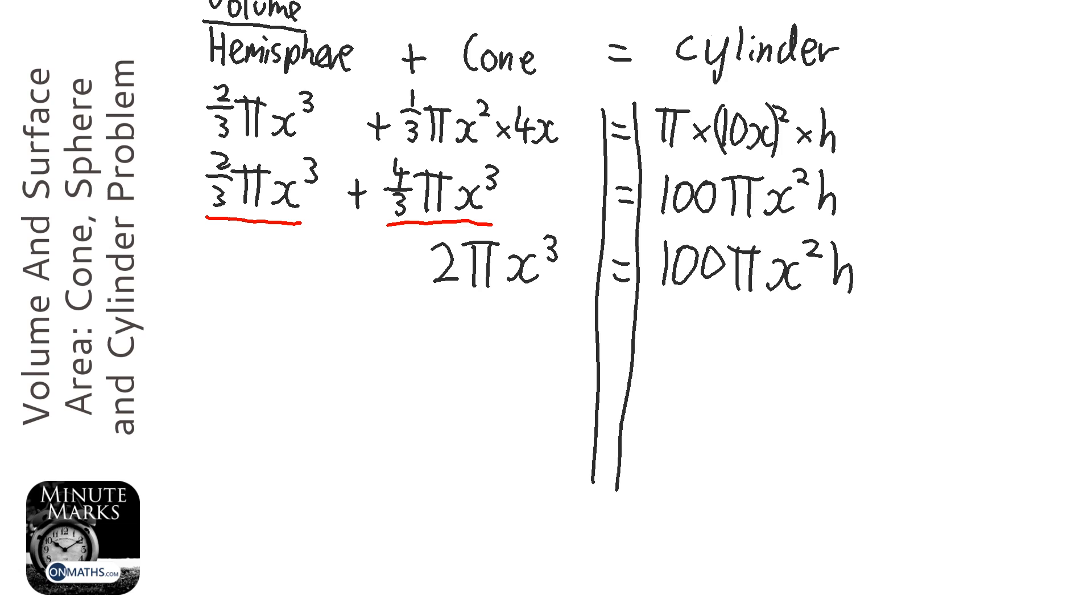Okay, so first thing I need to do, well let's have a look, what's easy to do? Well, what's easy to do is just divide both sides by pi. Let's get rid of the pi's. So 2x cubed equals 100 x squared h.